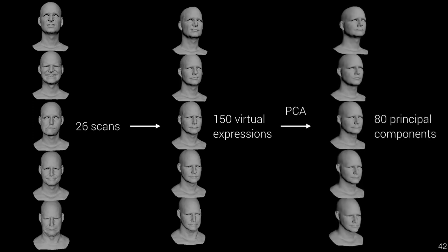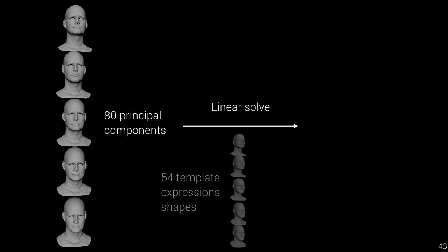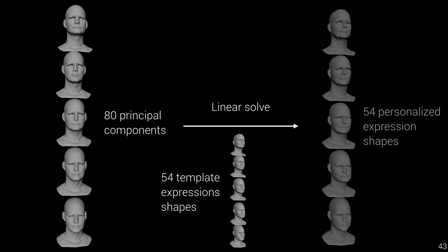By computing PCA on these approximately 150 shapes, we get a new set of shapes that are orthogonal and have lower dimensionality — the same principle as when computing PCA on identity models, but applied to expressions. If we then compute a linear solve of these principal components so that they combine to produce the best approximation of each pre-existing template blend shape, we can produce a set of personalized expression shapes. The resulting shapes are limited to linear combinations of movement the given scan subject's face can produce, making them unique to his or her face model.